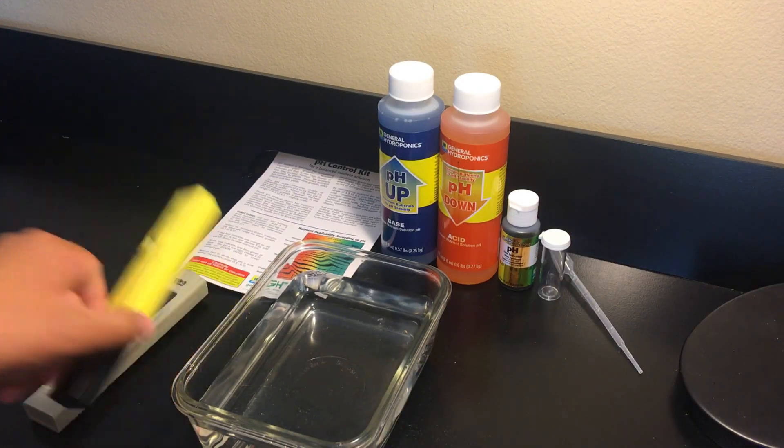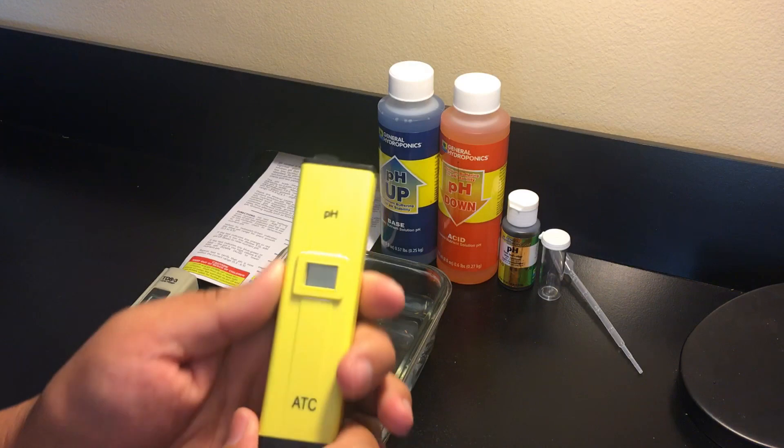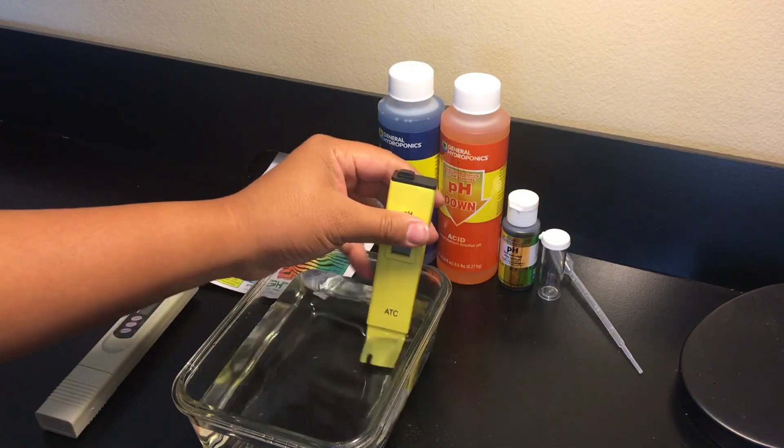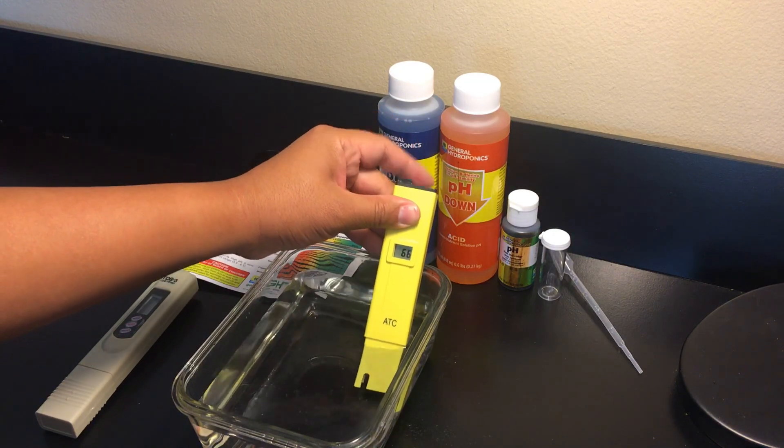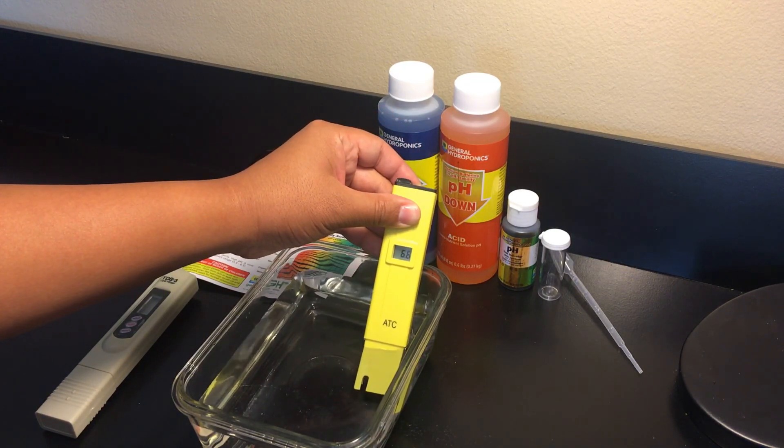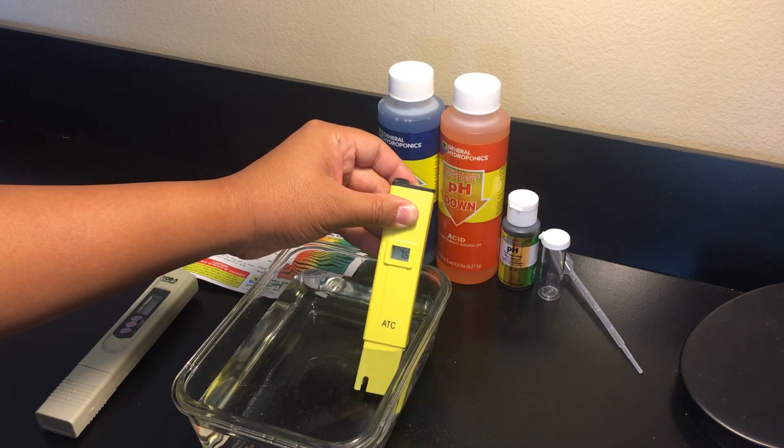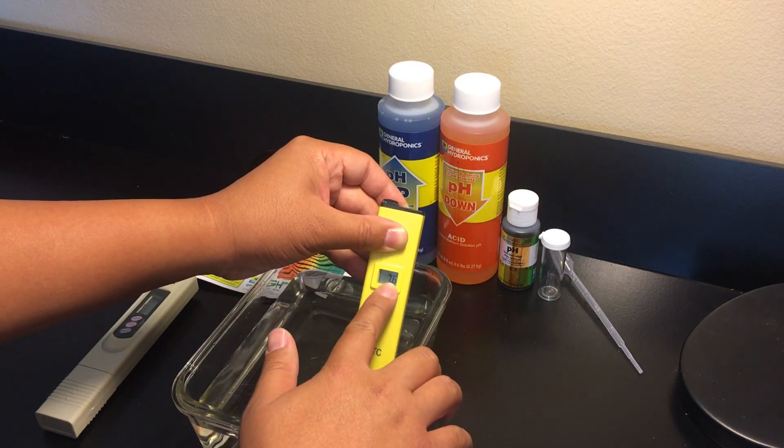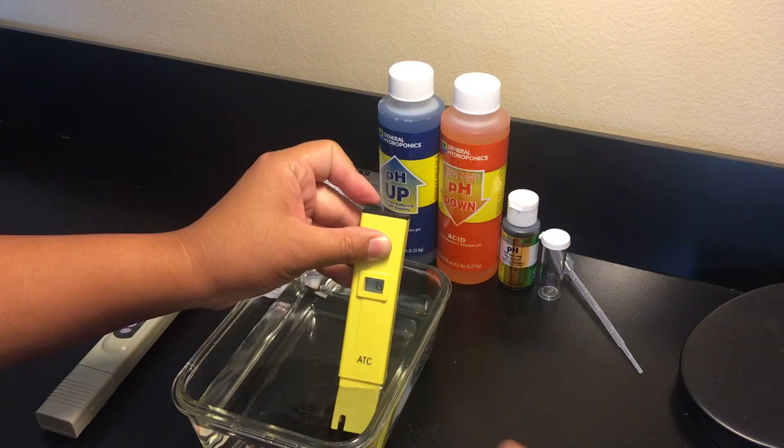If this is a common occurrence I definitely recommend going with a digital pH meter which is a little more expensive than the old school method of using a pH test kit and a beaker of water. Just like the TDS meter all you need to do is stick it in the water, turn it on and it'll give you a reading of what the pH of the water is.